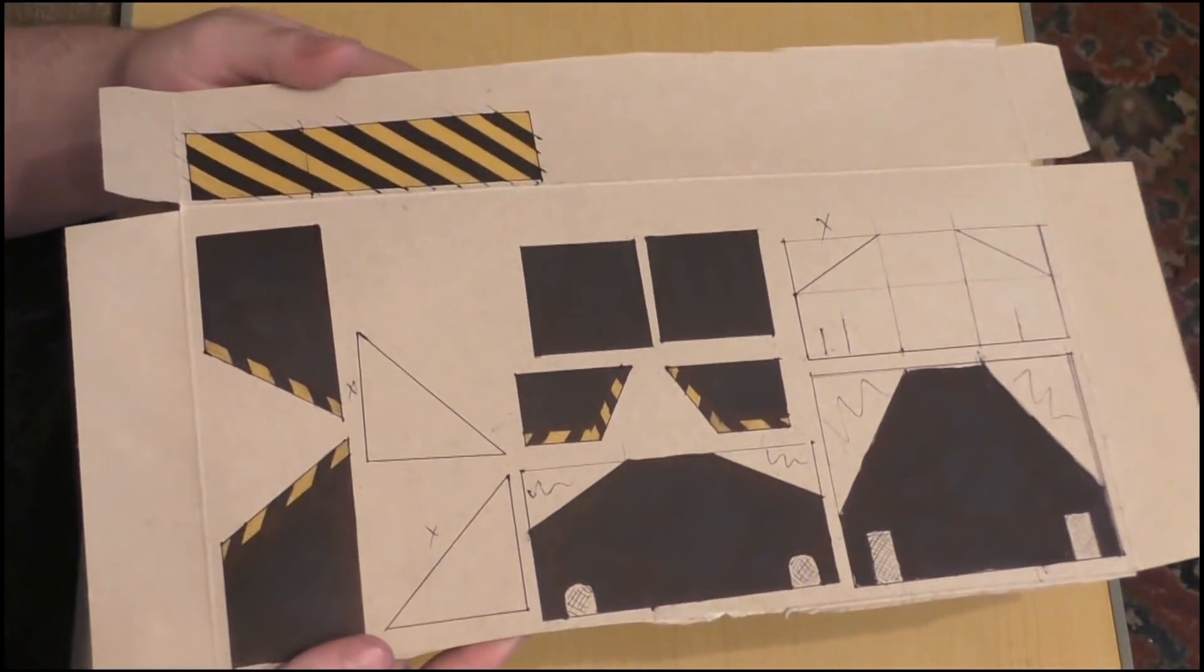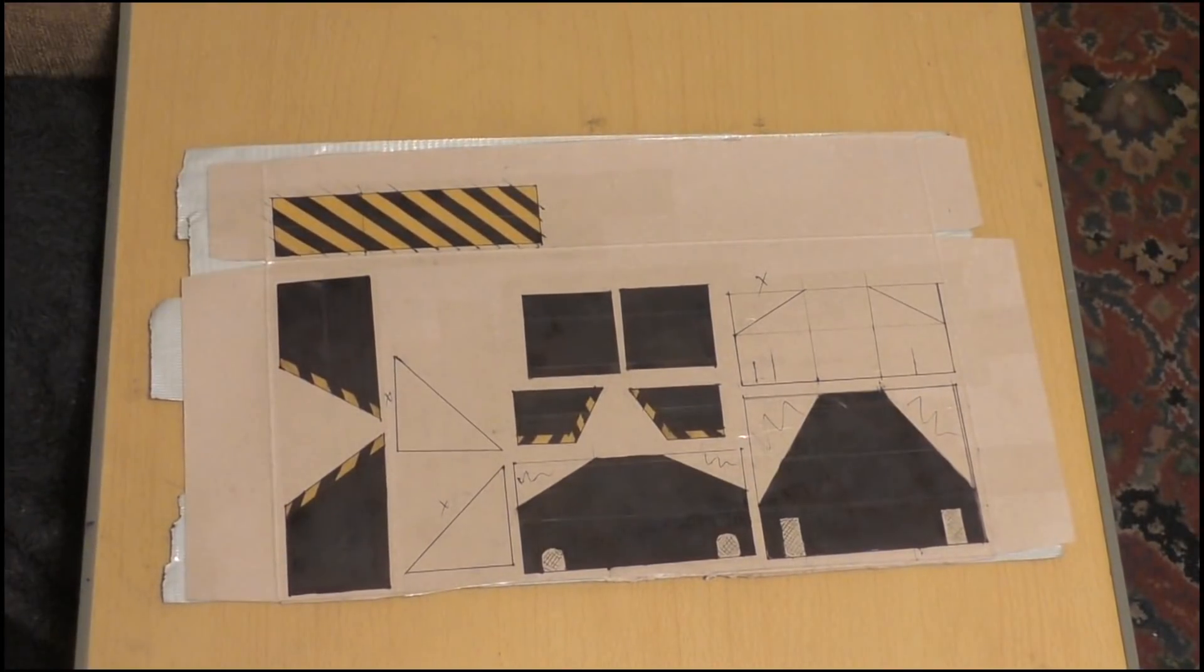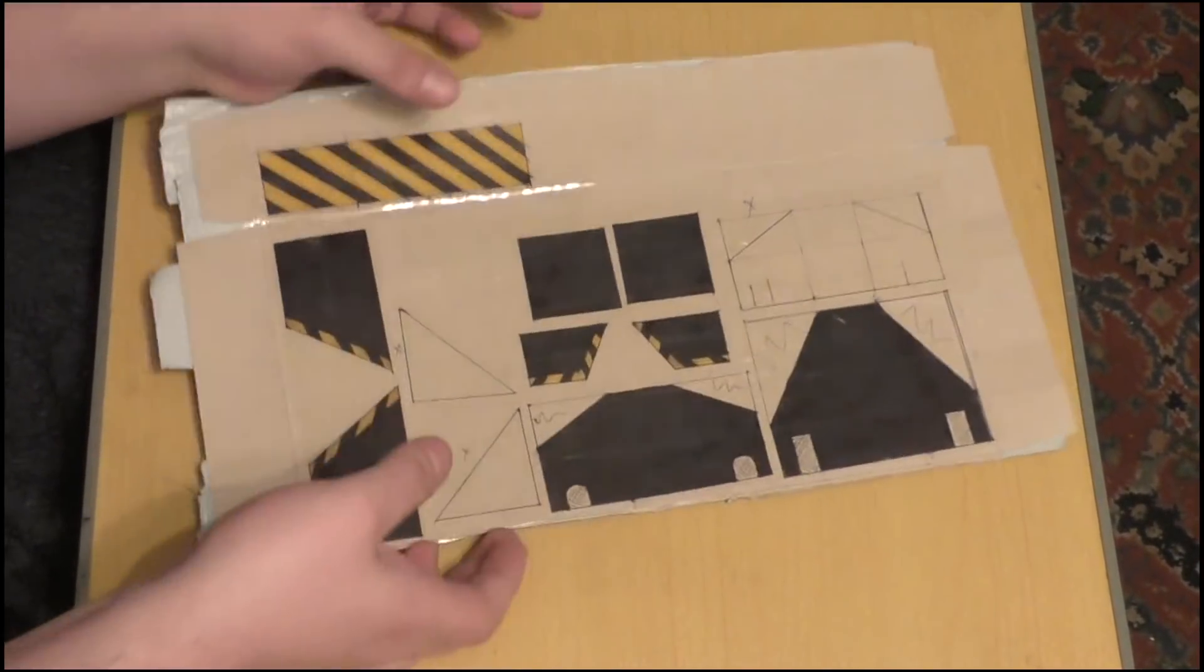And as you can see, you can add various bits of detail onto each section at this point too. Next, cover the entirety of the panels with sellotape. This will keep the model from rotting away and help it to look more metallic.